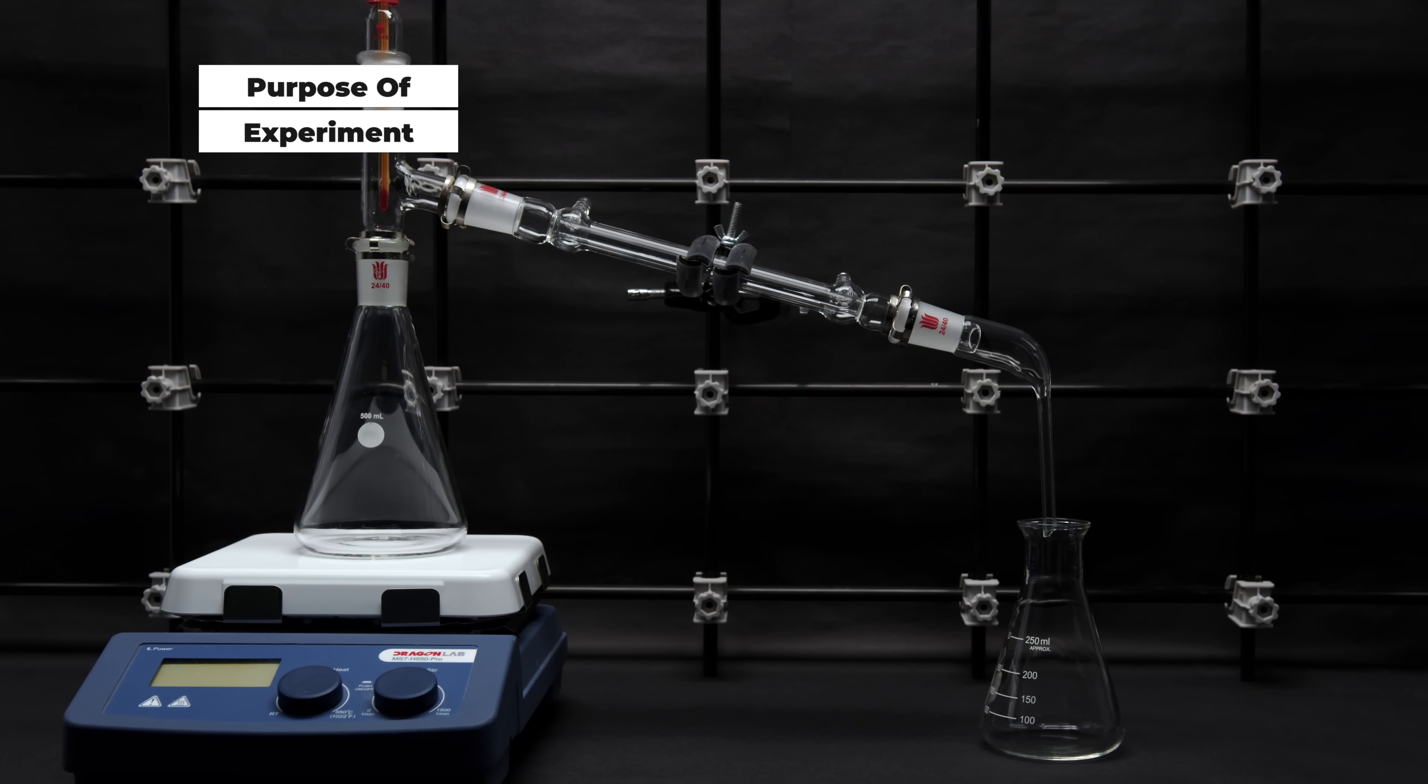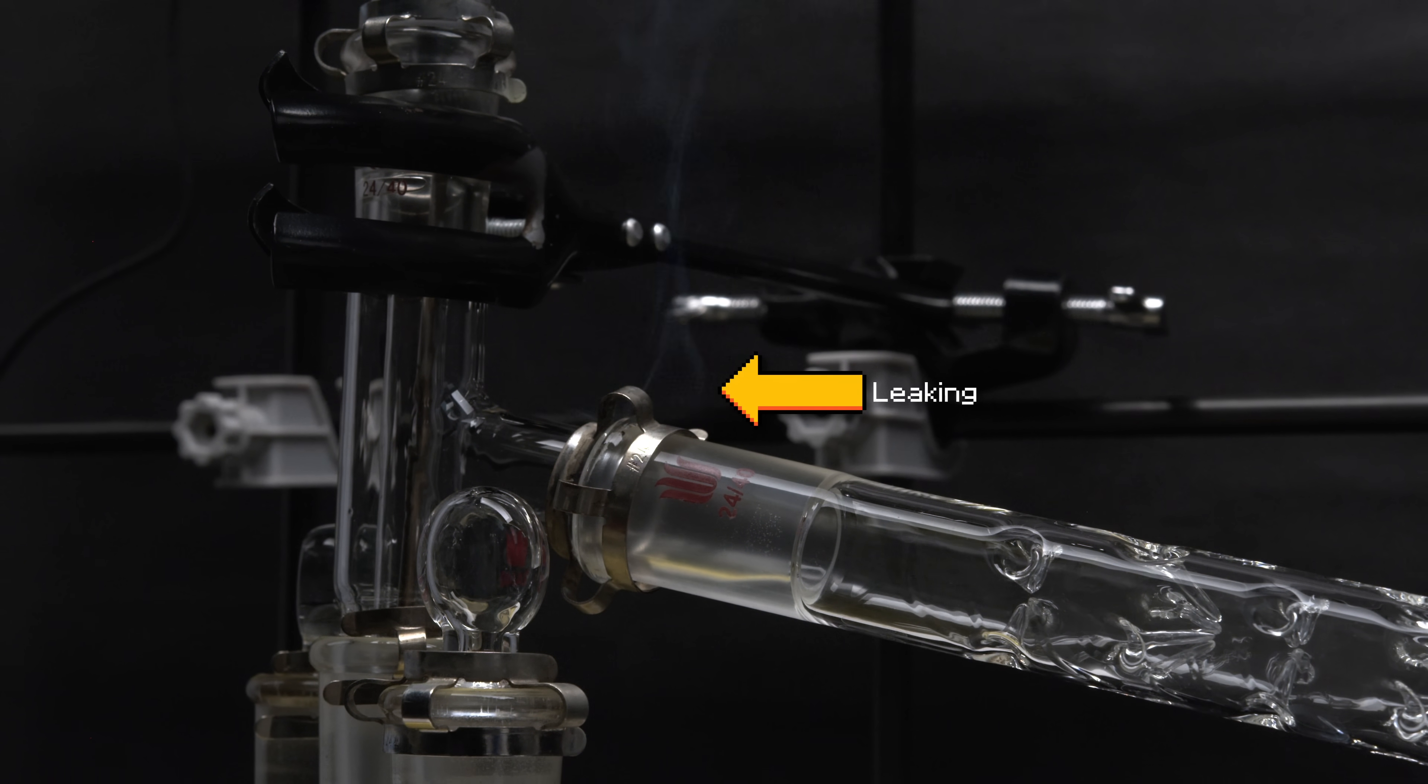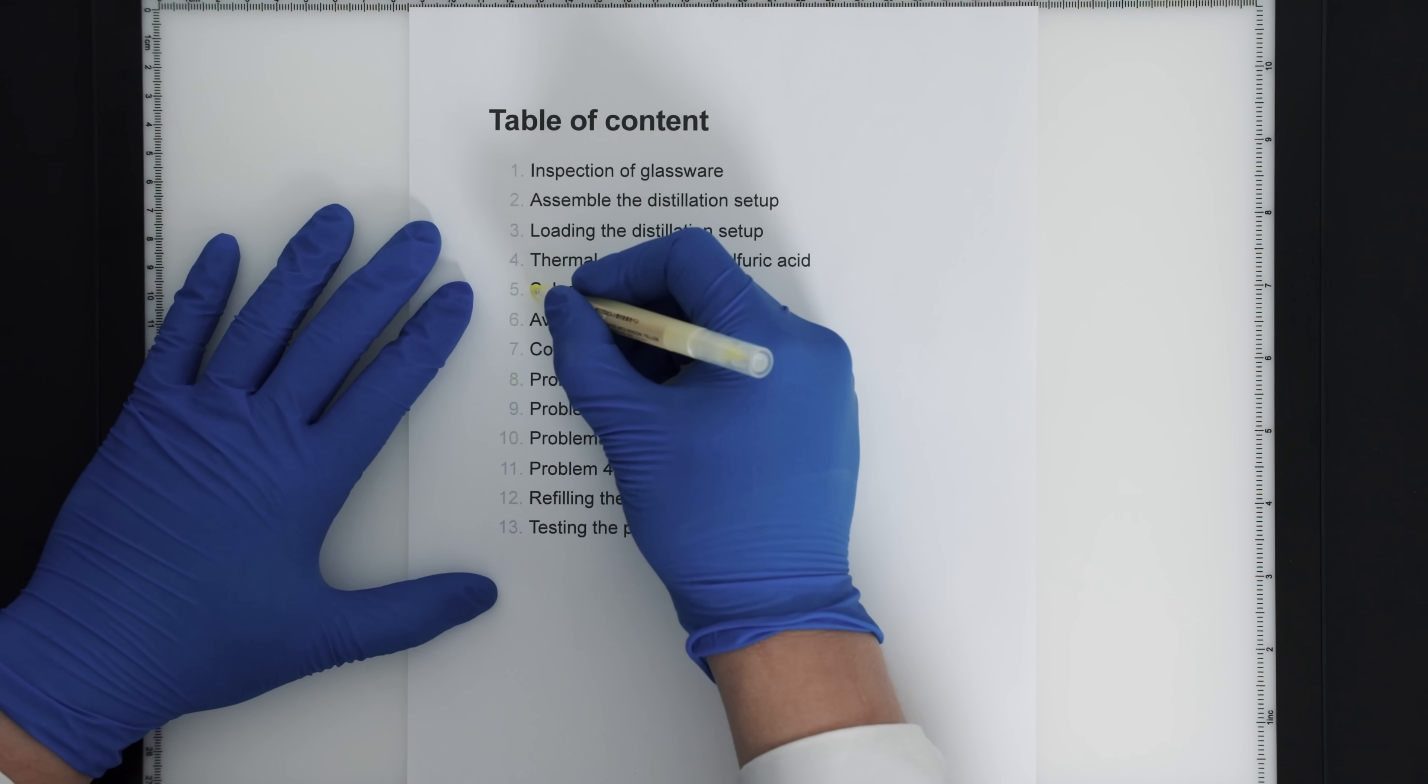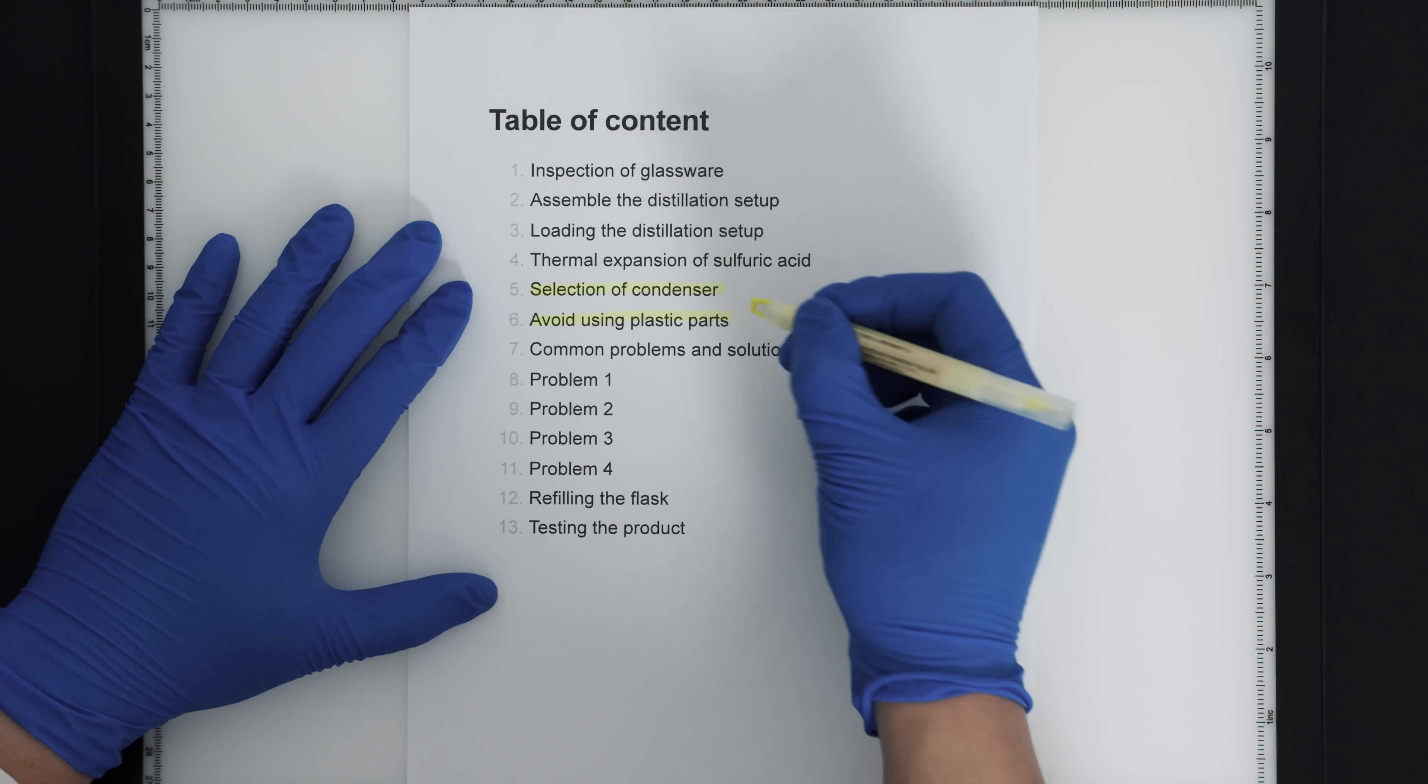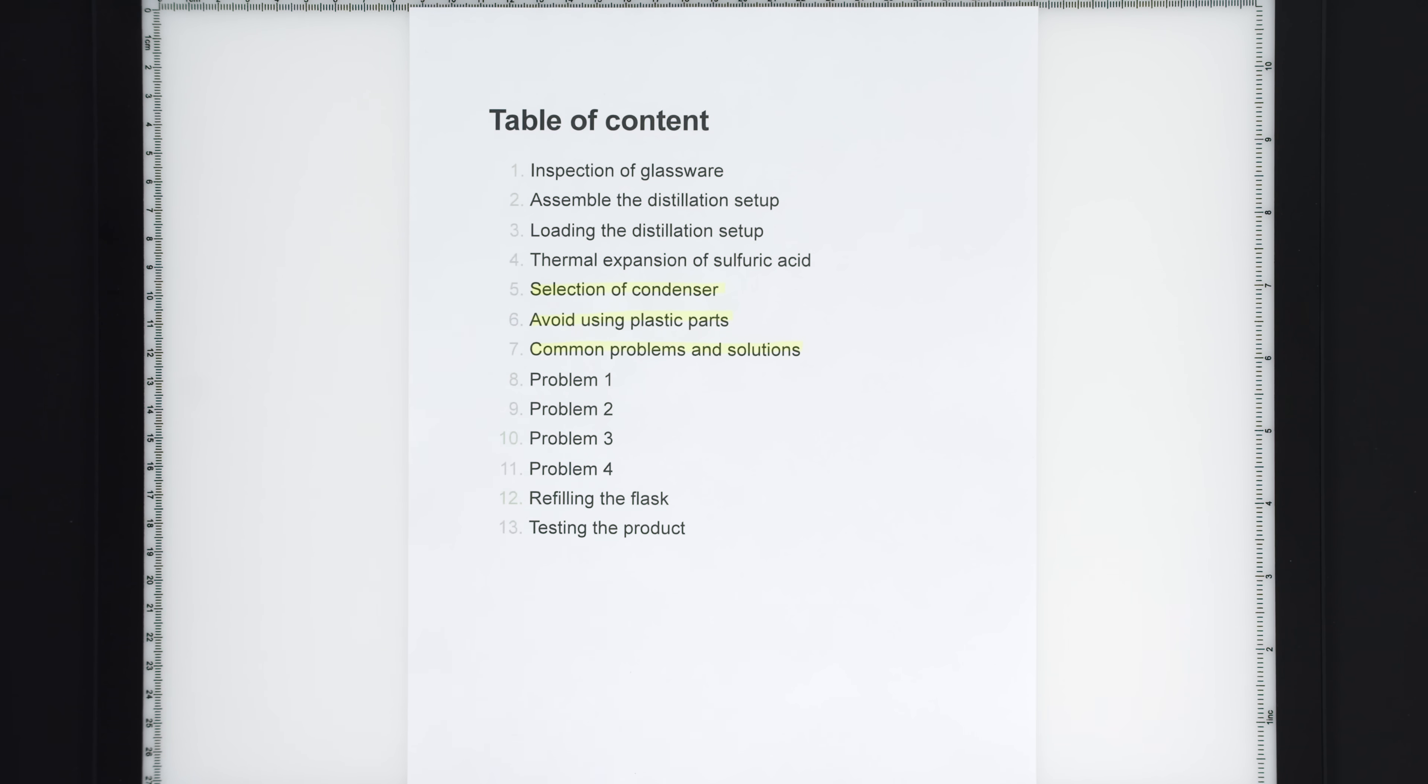If you think this is yet another distillation video and click away, hold up. The distillation of concentrated sulfuric acid is much more complicated than just simple distillation. There are 4 common problems associated with sulfuric acid distillation. However, there are combinations of factors which can't be addressed individually. But don't worry, I will give a detailed breakdown of every important bit I can think of about distilling concentrated sulfuric acid, including the why and the how.